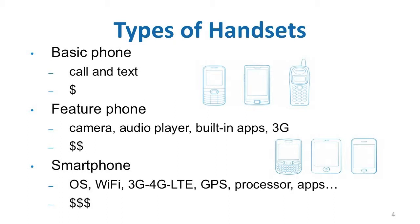Let's have a look at the main types of the handset. Starting with the basic phone, often referred to as a dumb phone — it can make voice calls and send text. Basic phones are affordable and although they might be a dying breed, they remain popular in some regions of the world since they offer outstanding battery life, pretty durable design, and affordable prices.